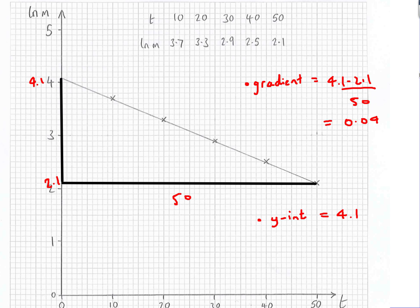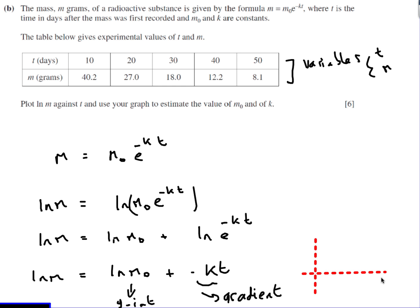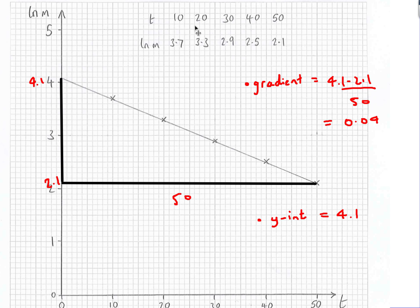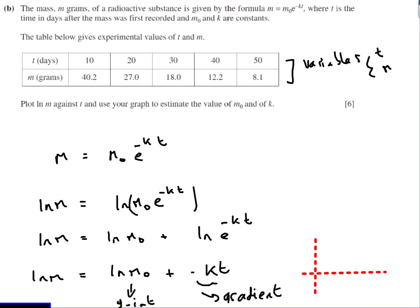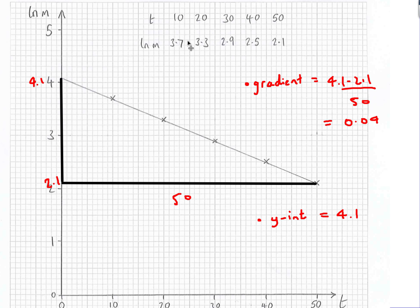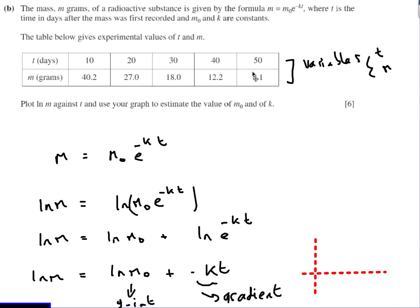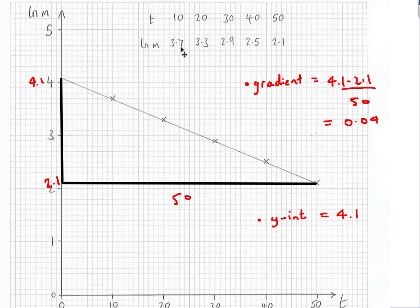I'm plotting t on the x-axis and ln m on the y-axis. At the moment I have t and m values, so I need to compute ln m. When t is 10, m is 40.2, so ln(40.2) gives 3.7. When t is 20, m is 27, so ln(27) gives about 3.3. And so on — I'm now plotting t against ln m and plotting those points.